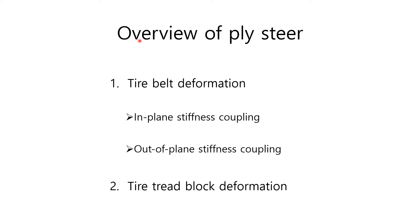Here we have an overview of ply steer. The root causes of ply steer are tire belt deformation and tire block deformation. Speaking about tire belt deformation, there are two root causes: first, in-plane stiffness coupling, and second, out-of-plane stiffness coupling. Those two are the main effects to produce ply steer. In this video, I will explain the in-plane stiffness coupling first. The rest of the topics will be discussed in the upcoming videos.